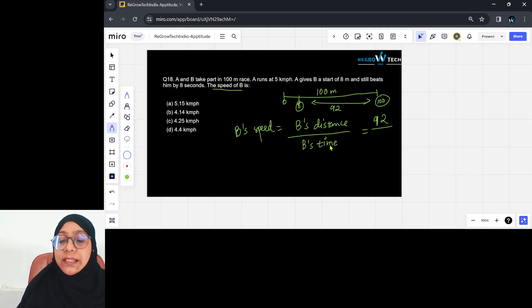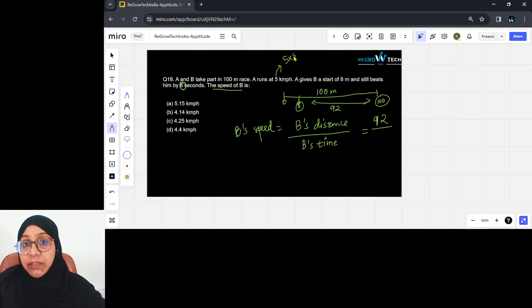Now what is B's time? This can be a little tricky because B takes 8 seconds extra from what A took. So if we can calculate A's time, we will just add 8 to this. A's time is simply distance by speed. Speed for A is given as 5 kilometer per hour. Convert it into meter per second first: 5 multiplied by 5 upon 18. Let's keep it as 25 upon 18 for now.